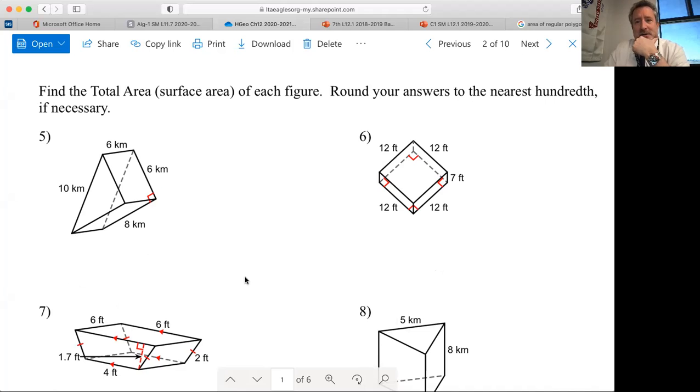So two parallel sides, two parallel bases I should say, and the sides are all made up of rectangles. So if you look at number five, well the bases are the triangles.